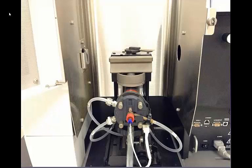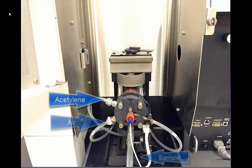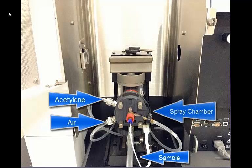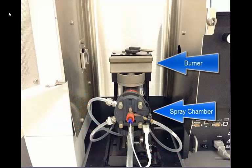The image you are now looking at illustrates the entire sample introduction system of an AA. You have gas inlets, a sample inlet, a spray chamber, and a burner.